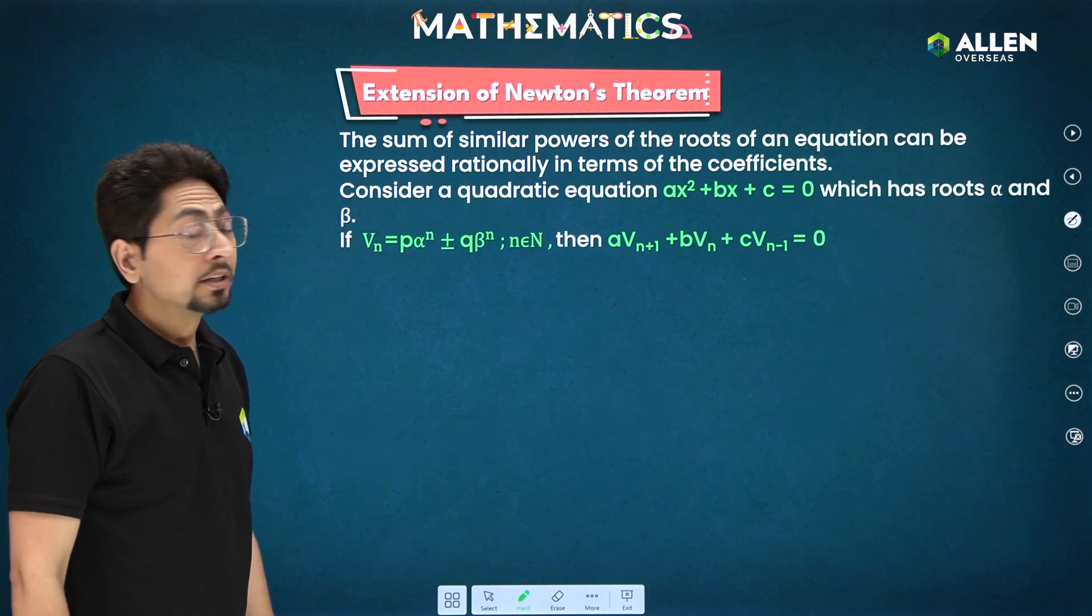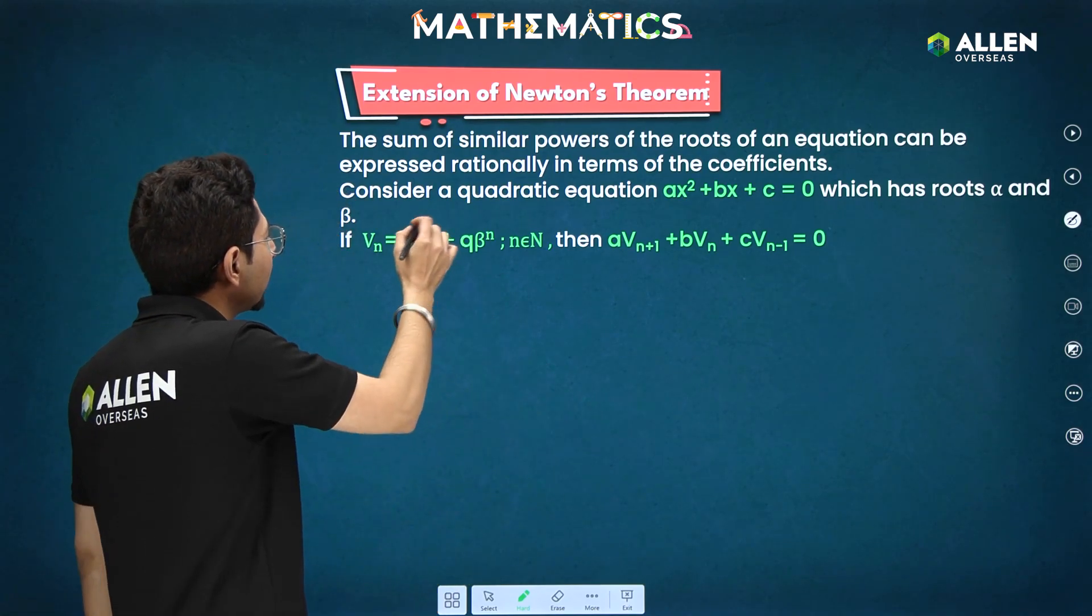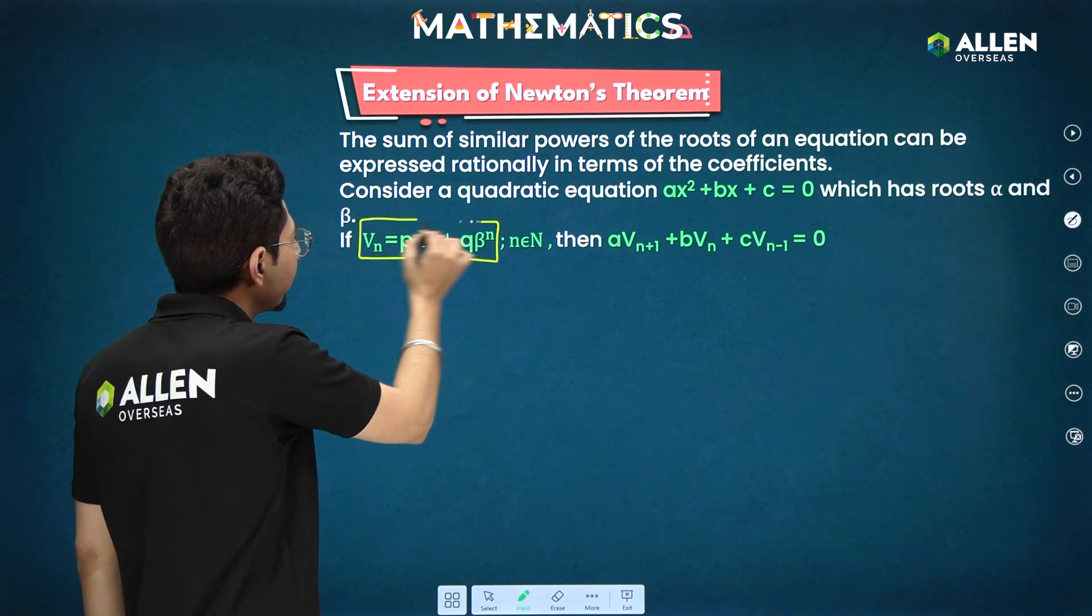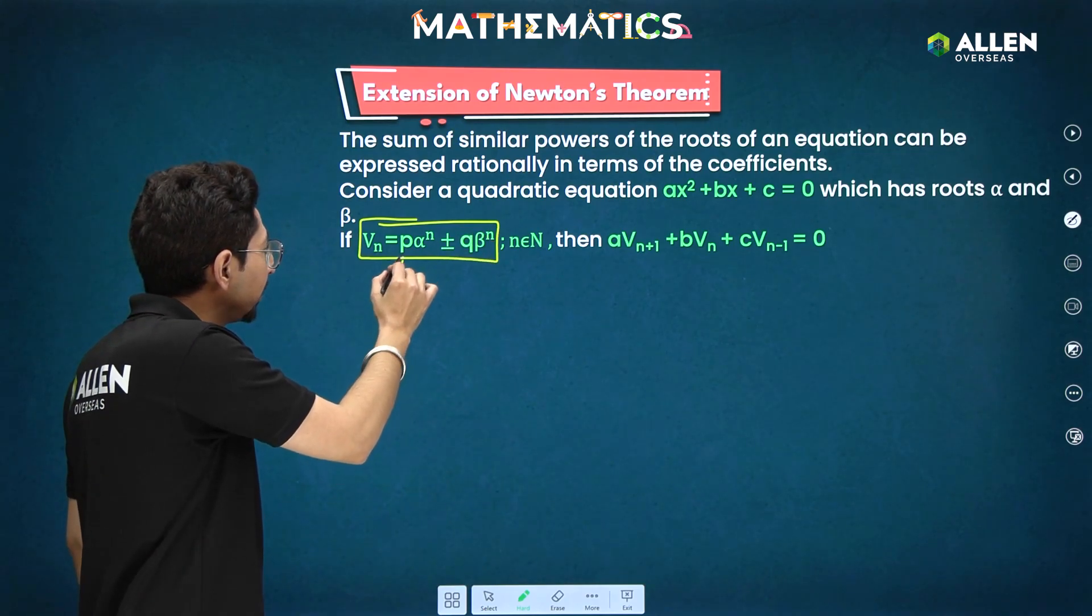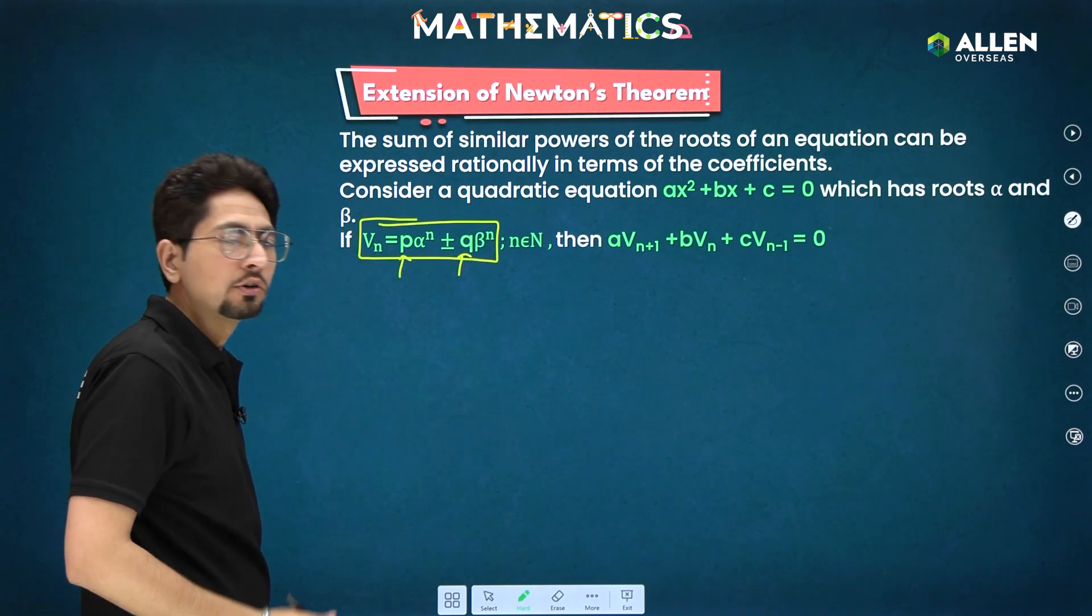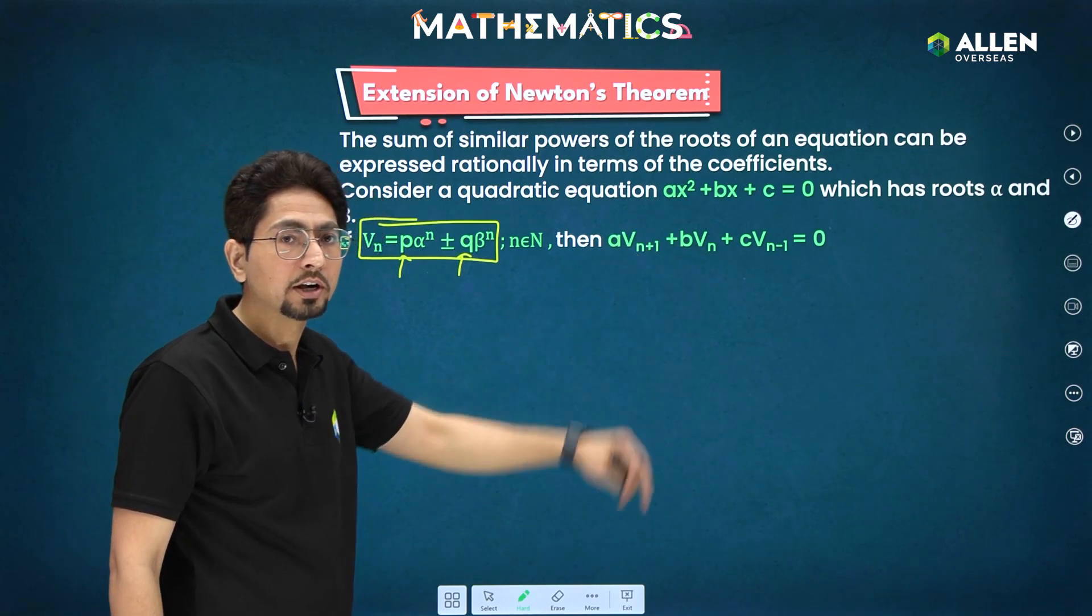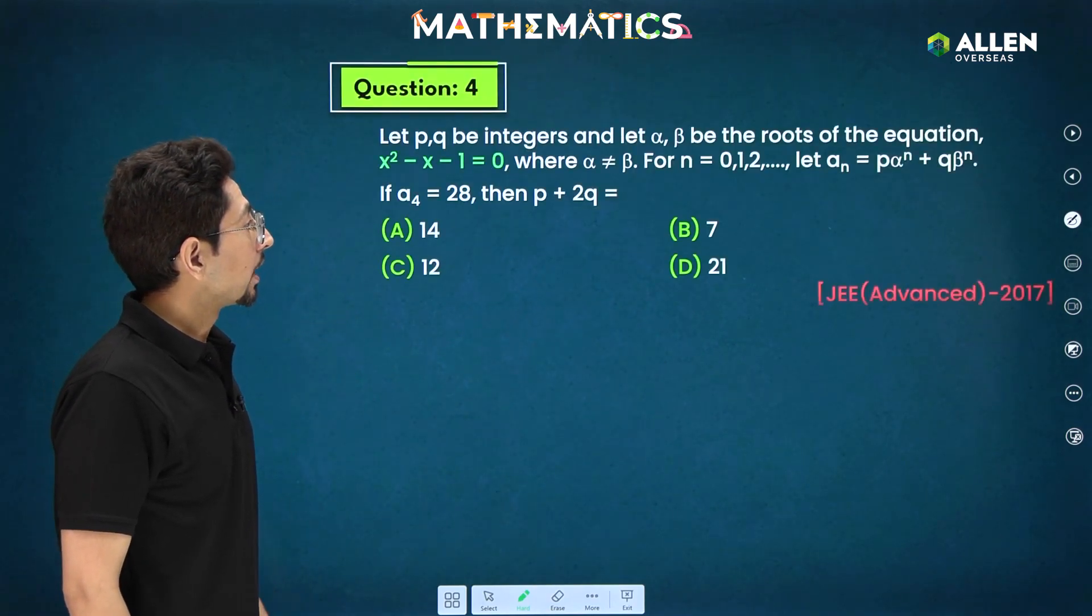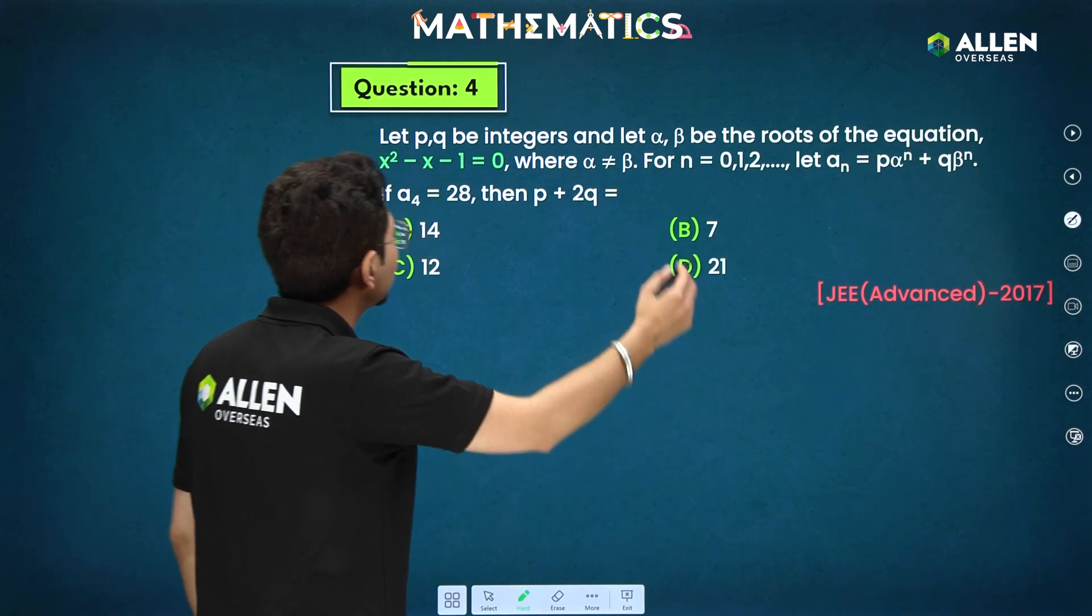Proceeding with next part. Next is extension of Newton's theorem. Now, same thing, exactly same thing. If you have been given such condition then also Newton's theorem is applicable. What we have done here? P is multiplied here and q is multiplied. Any constants can be multiplied. So again that will be still be valid. Based on this, IIT has asked question in JEE Advanced 2017. What is that?